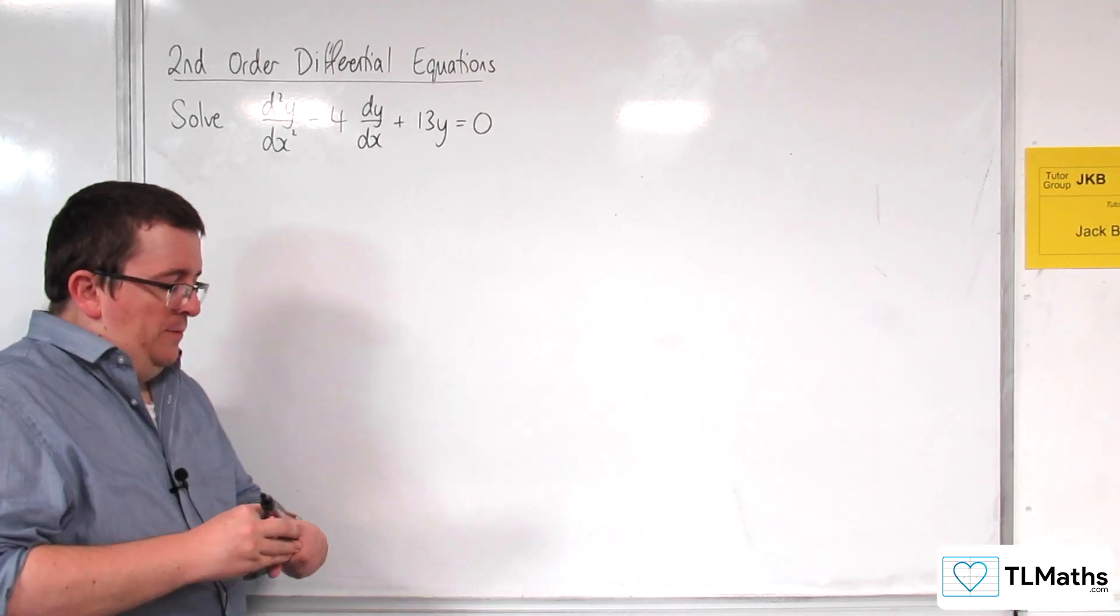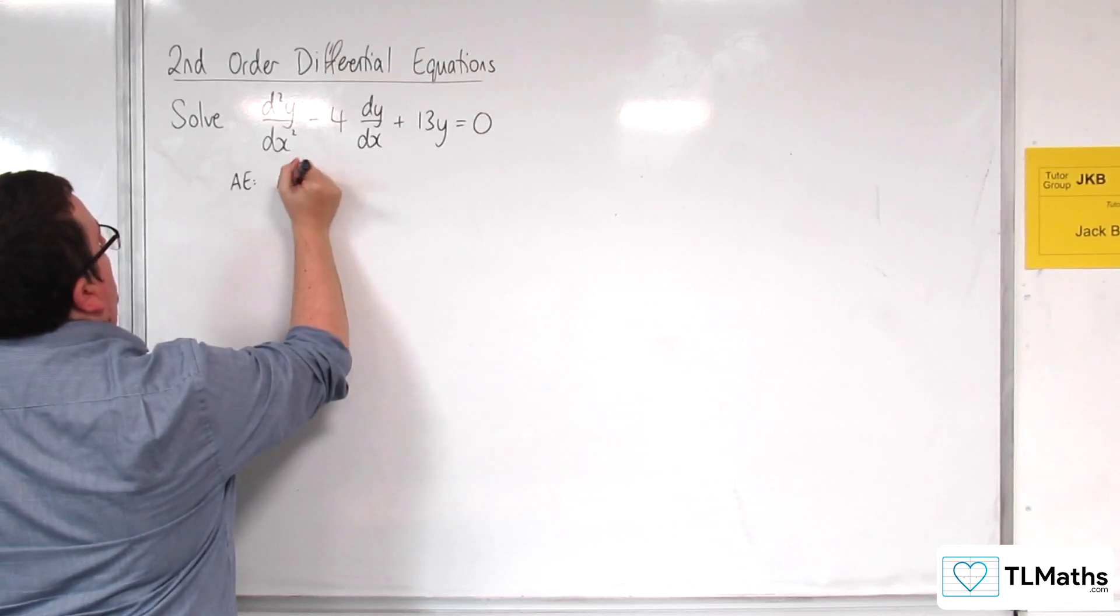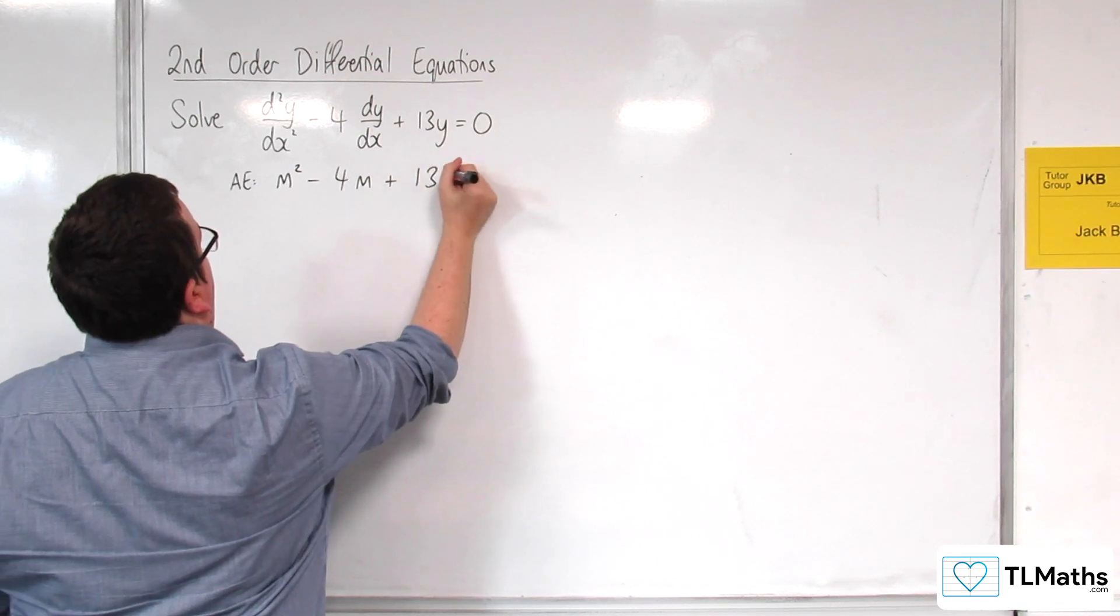So first of all, the auxiliary equation. That would be m squared, take away 4m, plus 13 equals 0.